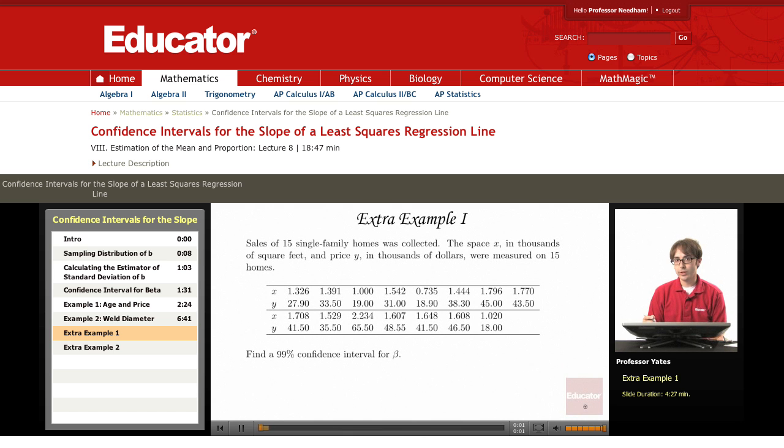Welcome back to Educator.com. We're going to look at a few more examples on finding the confidence interval for the slope of a least squares regression line. Here we have sales of 15 single family homes that was collected. The space X is in thousands of square feet and price Y in thousands of dollars, measured on 15 homes.